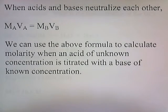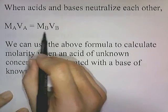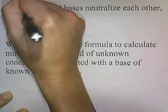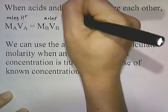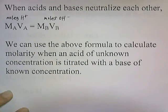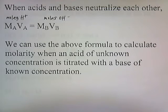When acids and bases neutralize each other, the moles of acid equal the moles of base. A neutral solution has equal amounts of H+ and OH- in it. We can use the above formula to calculate the molarity when an acid of unknown concentration is titrated with a base of known concentration.